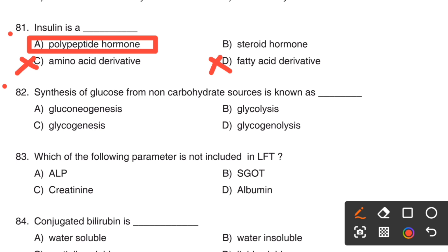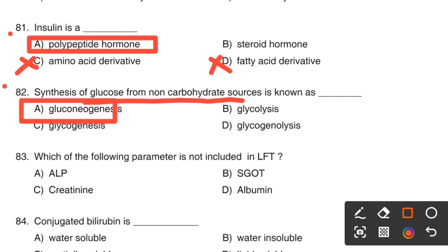Next question. Synthesis of glucose from non-carbohydrate sources is known as: Option A, Gluconeogenesis. Option B, Glycolysis. Option C, Glycogenesis. Option D, Glycogenolysis. The right answer is Option A, Gluconeogenesis.